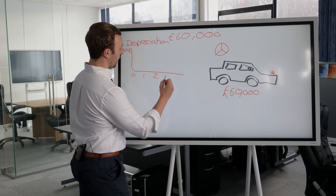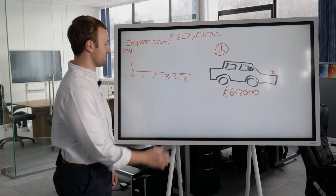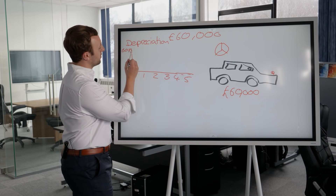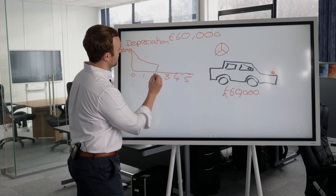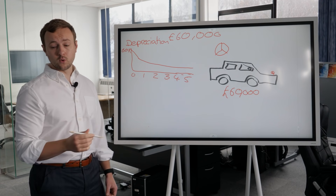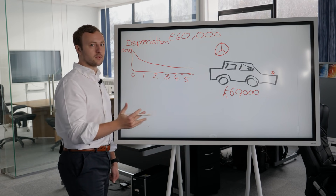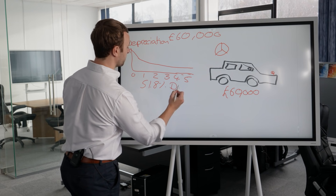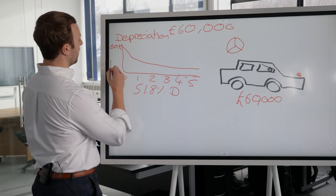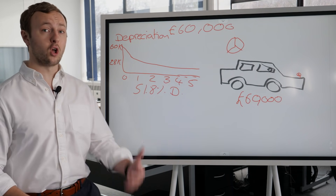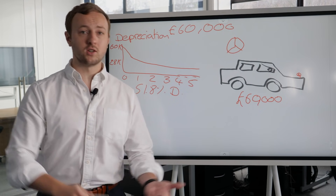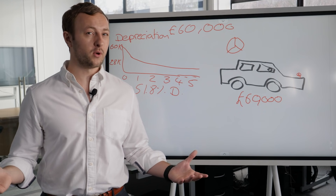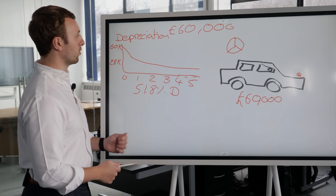Over that five-year period, that 60,000-pound car is going to be worth just over 28,000 pounds. So you have lost 32,000 pounds of your money, plus any maintenance, new tires, oil changes, and services. So is that an asset? I would argue not. Let's look at it from a completely different angle.